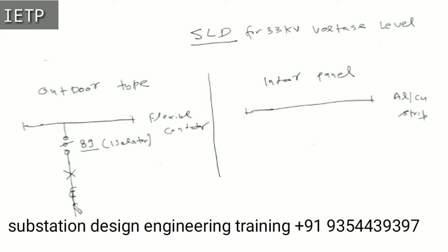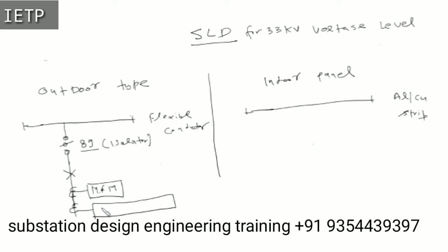We will use a two-core CT here — two secondary cores. The first core is used for metering purposes, for a multifunction meter. The second core is used for protection purposes. For protection, we start with instantaneous overcurrent protection, ANSI code 50 for phase-to-phase fault and for phase-to-earth fault. As backup, we give IDMT — Inverse Definite Minimum Time — time-graded overcurrent protection: ANSI code 51 for phase-to-phase fault and 51 for phase-to-earth fault.